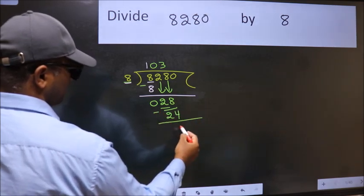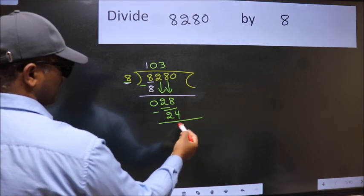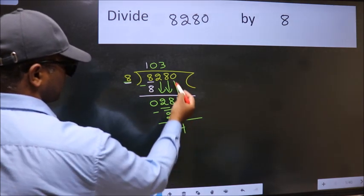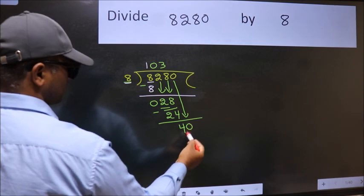Now we subtract. We get 4. After this, bring down the beside number. So, 0 down. So, 40.